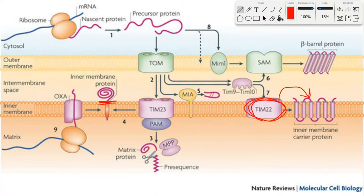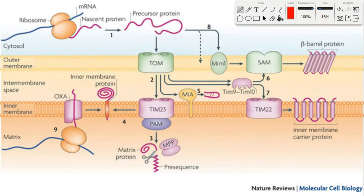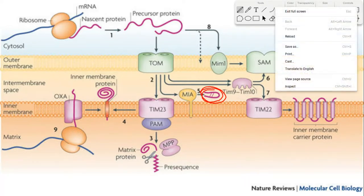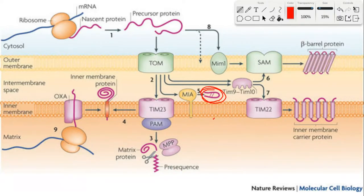Proteins destined for the intermembrane space are often inserted into the membrane and then cleaved, which releases them. Alternatively, the protein can be targeted by MIA. MIA is a protein that forms disulfide bridges, and when these proteins have their disulfide bridges formed by MIA, it locks the protein in the intermembrane space.